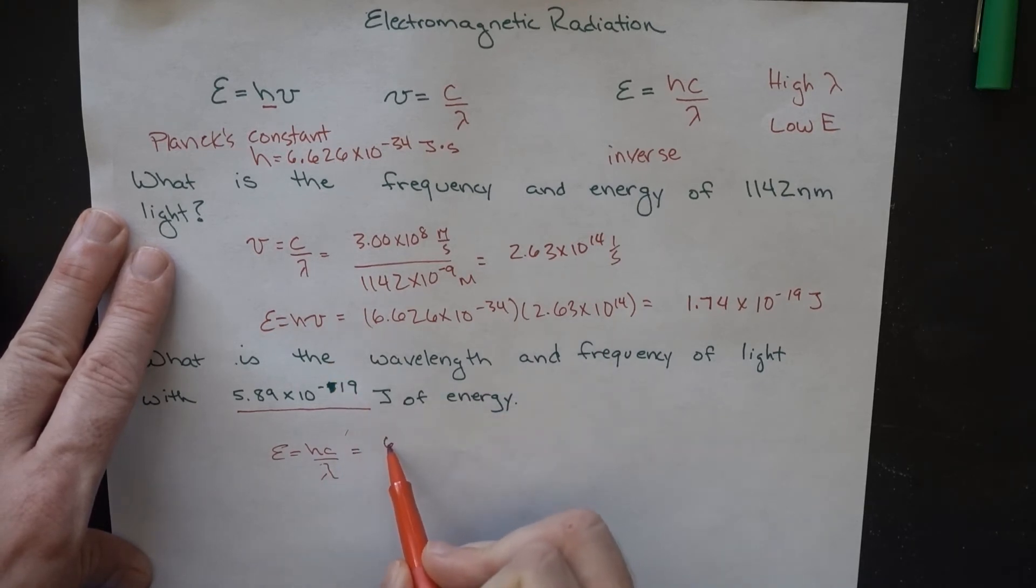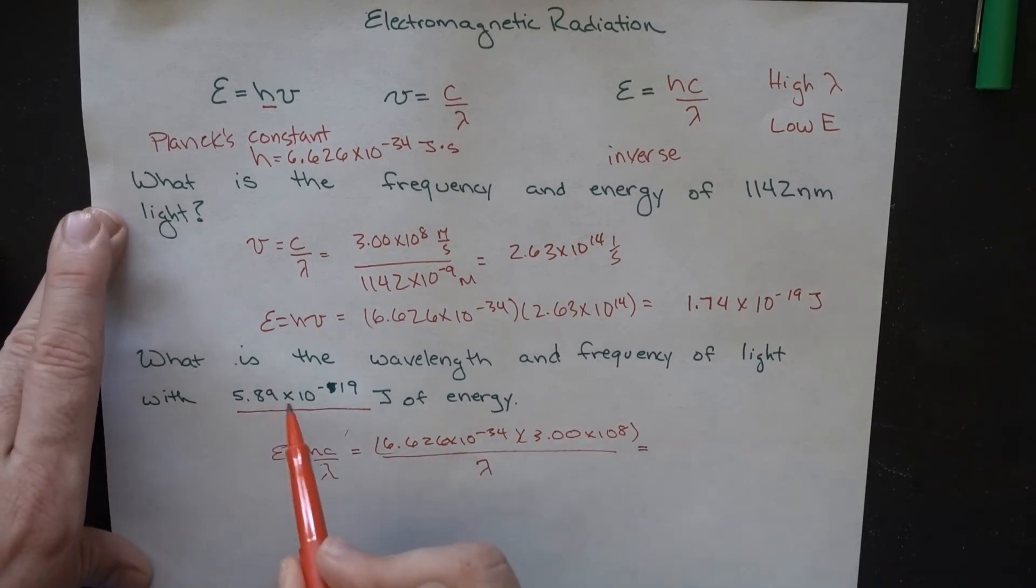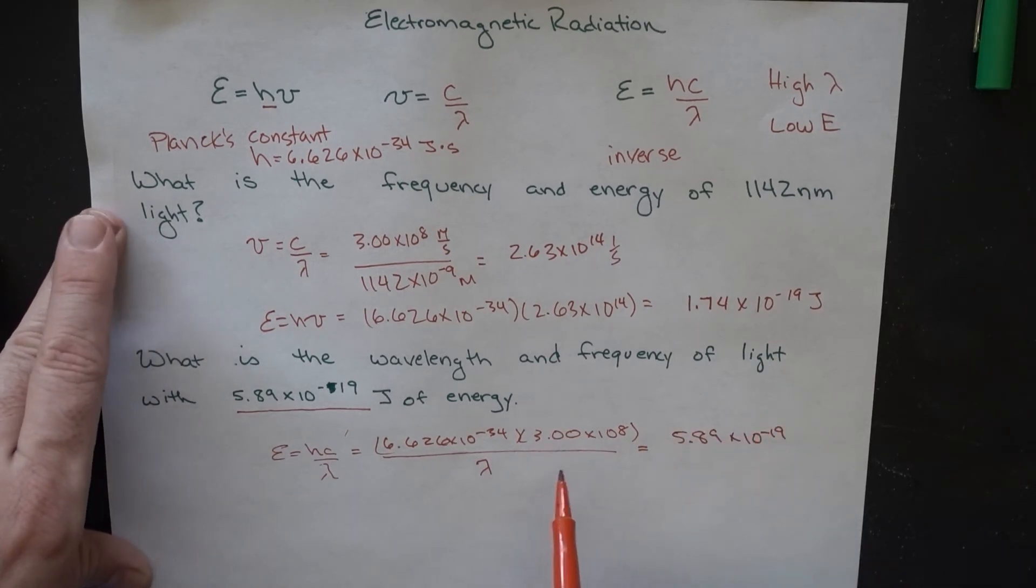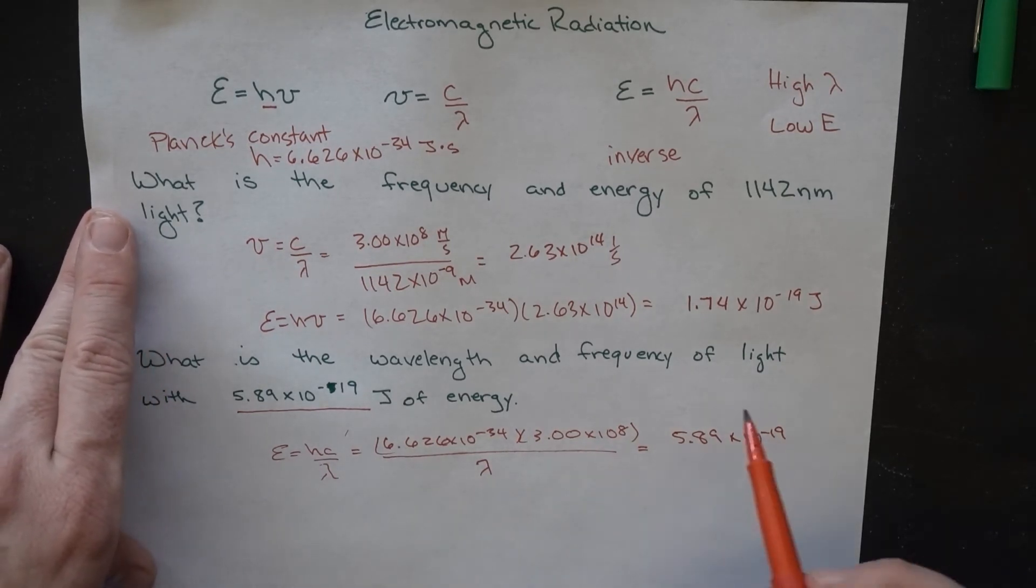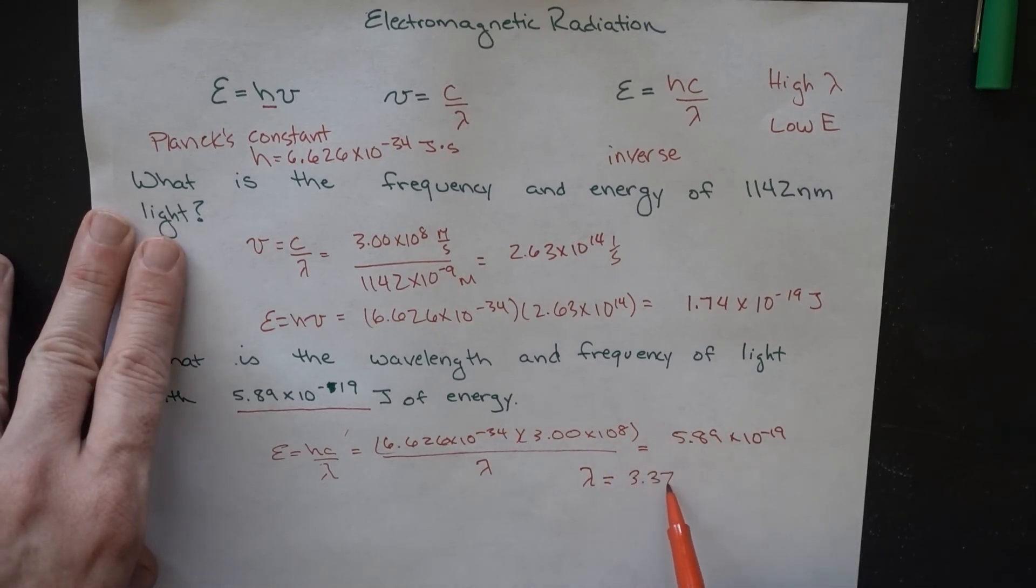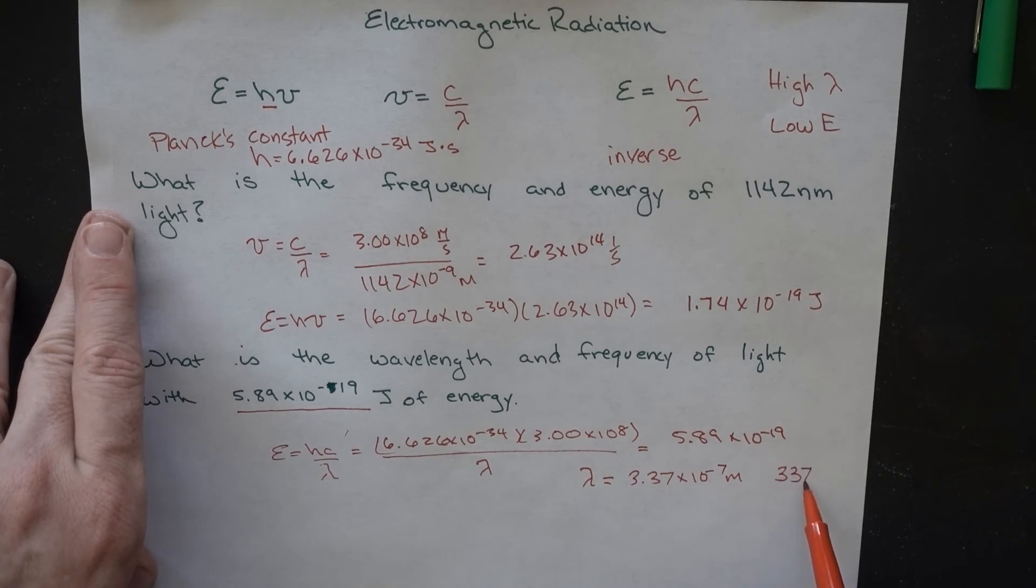So, 6.626 times 10 to the minus 34 times 3.0 times 10 to the 8th meters per second, all over lambda, which we're trying to get. And that's equal to this energy, 5.89 times 10 to the minus 19. All we need to do is multiply both sides by lambda, divide both sides by this. And we get a lambda of 3.37 times 10 to the minus 7 meters. And if you want to express that in nanometers, multiplying that by 10 to the 9th, or dividing by 10 to the minus 9, I should say, this comes out to 337 nanometers.